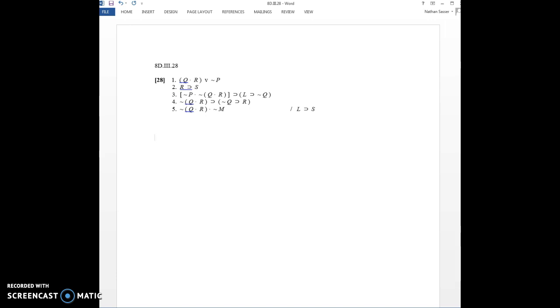The only rule that I know which will give me as a conclusion if L then S is a hypothetical syllogism. So I think that's what I'm going to have to use. At some point, remember my arrow means the same thing as horseshoe. So I'm going to use a hypothetical syllogism to get to this conclusion.